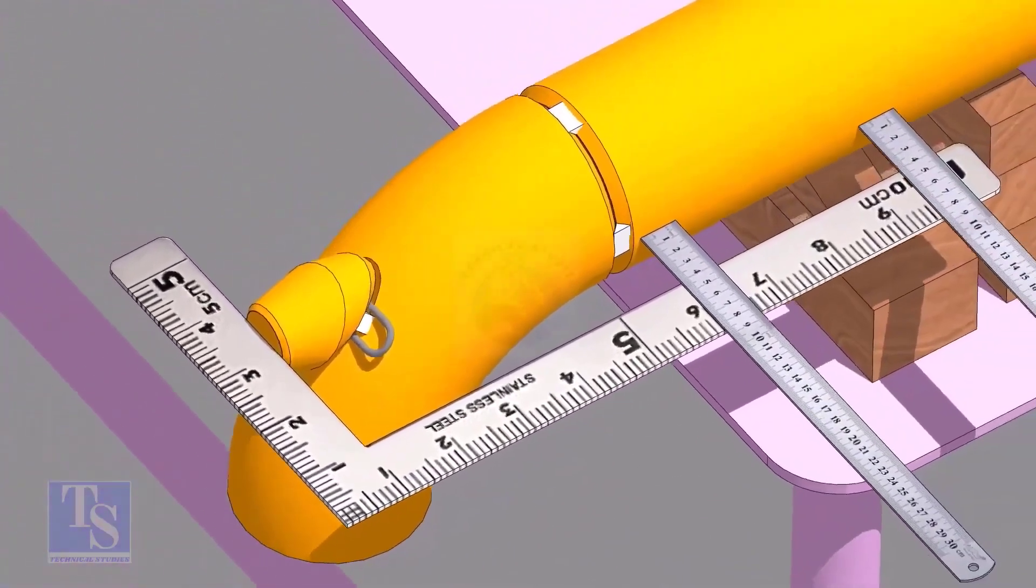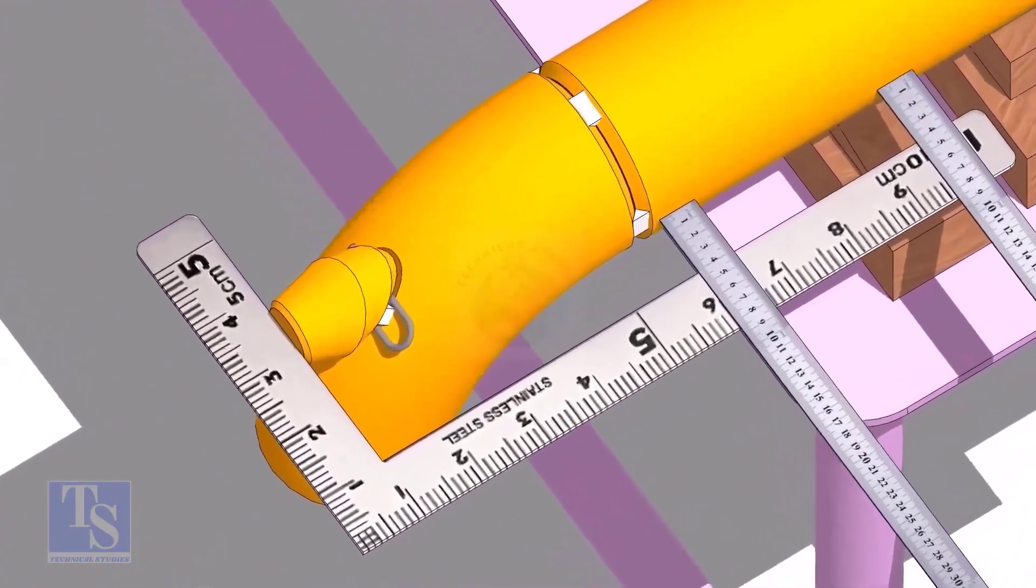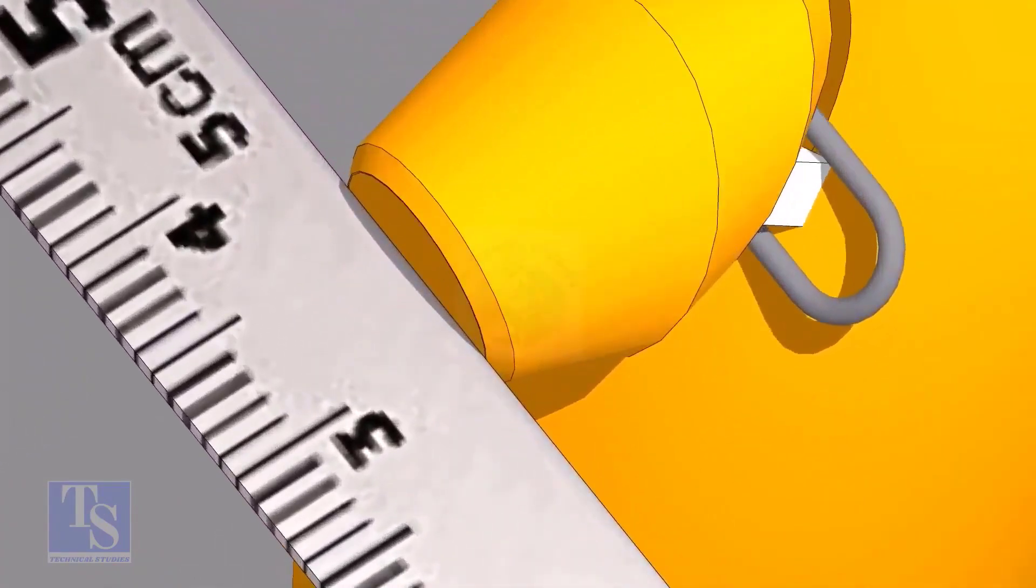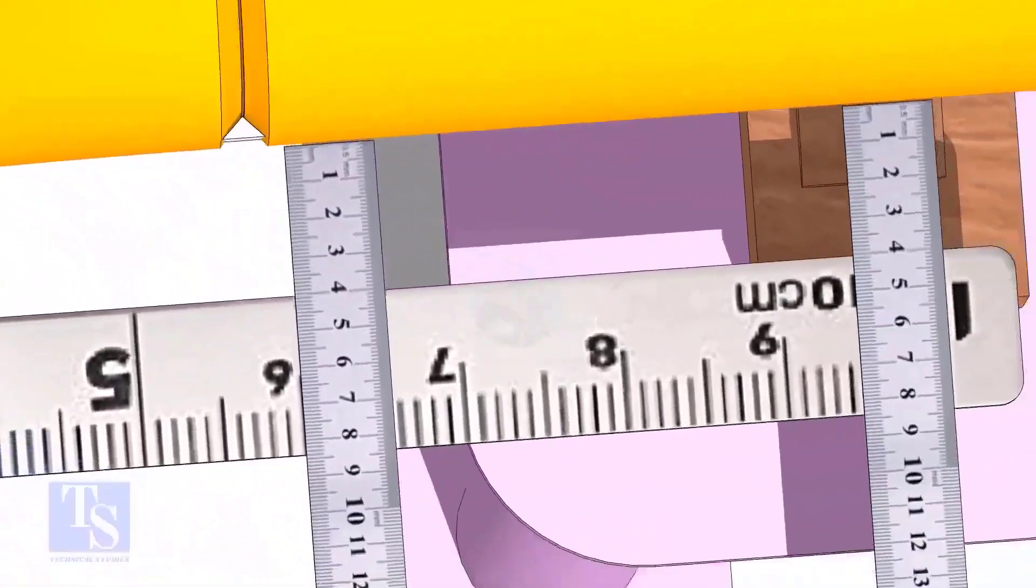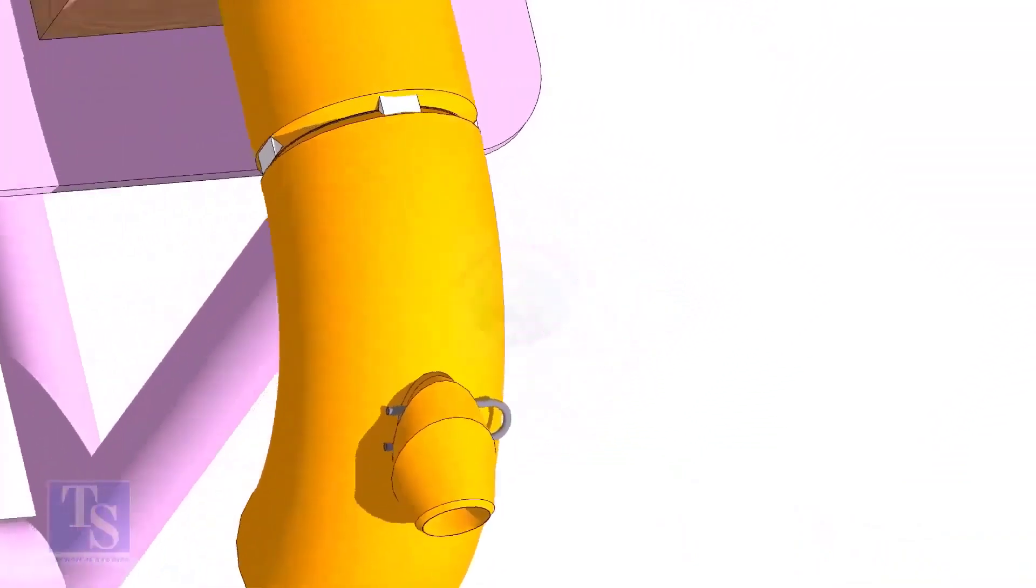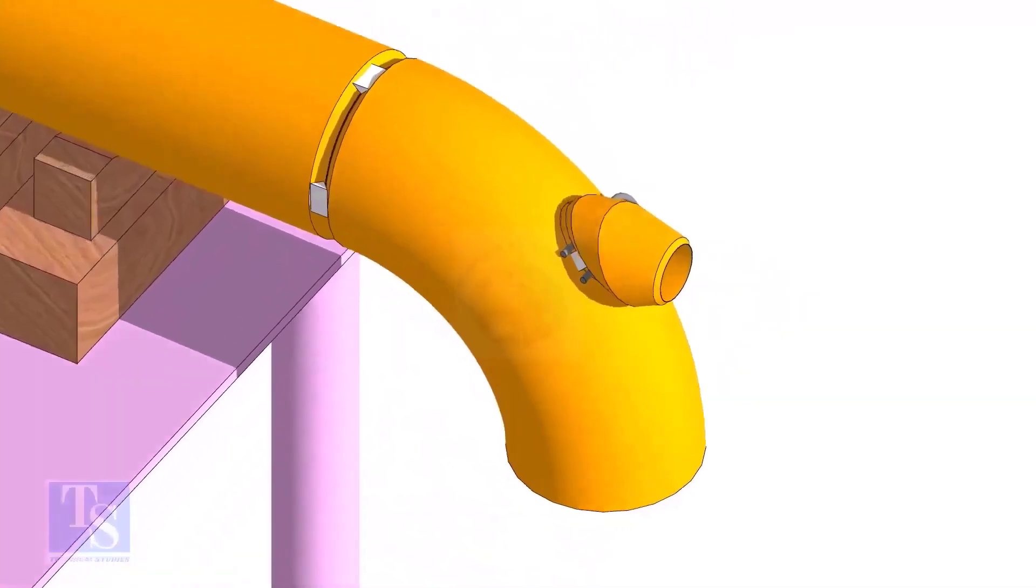Make the elbowlet face square to the side of the pipe. Tack weld on the opposite side.